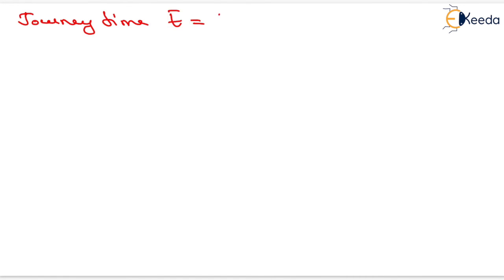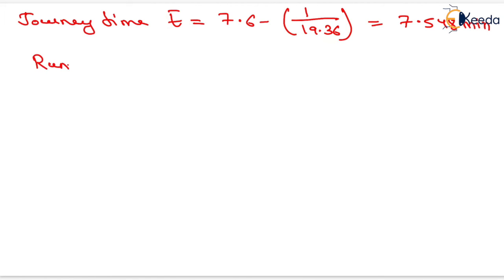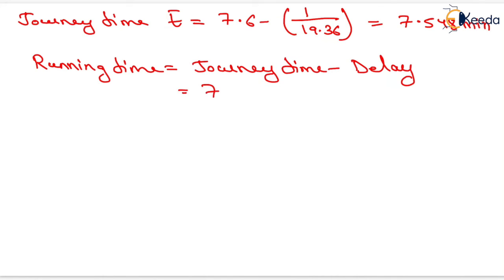Journey time T-bar for south-north equals TW minus NY divided by Q, that is 7.6 minus 1 divided by 19.36, giving 7.548 minutes. Running time equals journey time minus delay: 7.548 minutes minus delay of 1.96 minutes gives a running time of 5.58 minutes.